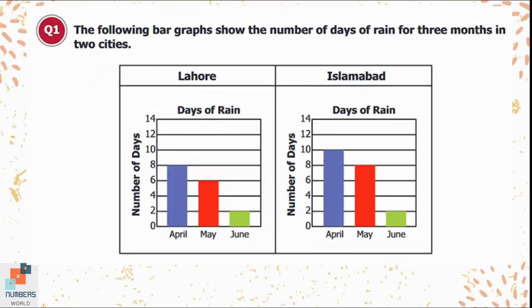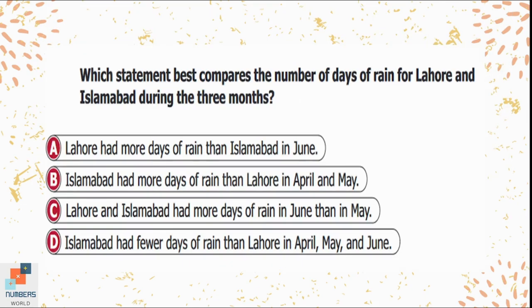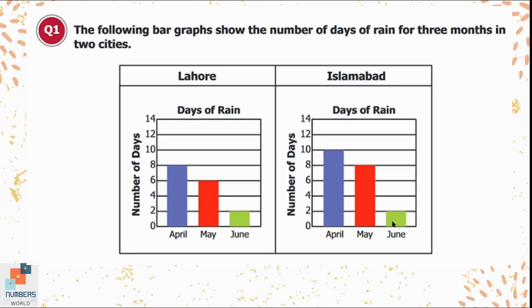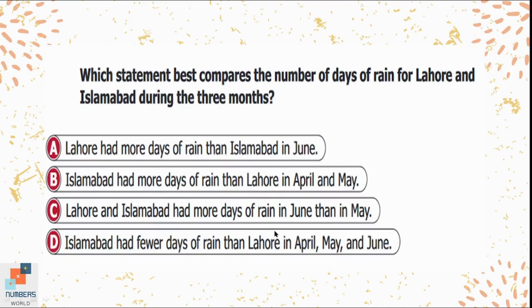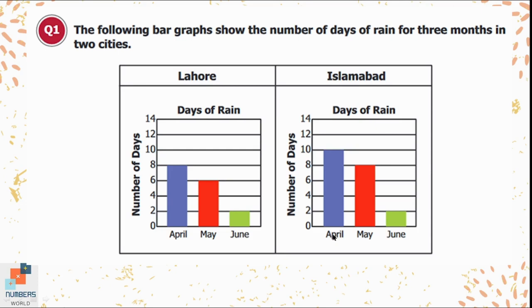Question 1: The following bar graph shows the number of days of rain for three months in two cities. Which statement best compares the number of days of rain for Lahore and Islamabad during the three months? Option A says Lahore had more days of rain than Islamabad in June — looking at the bars for both cities in June, they are the same, so option A is not correct. Option B says Islamabad had more days of rain than Lahore in April and May — the bars for Islamabad in April and May are longer than those for Lahore, so option B is the correct answer.